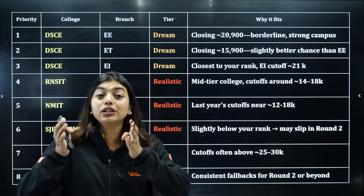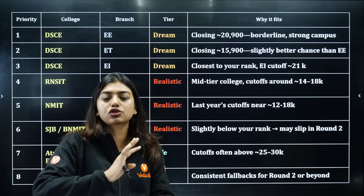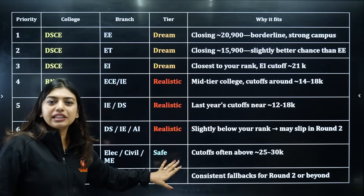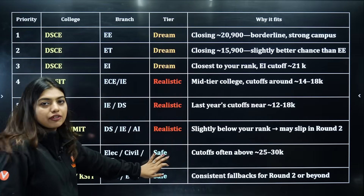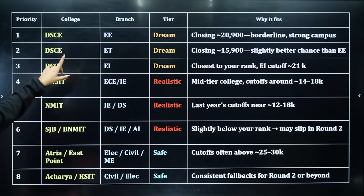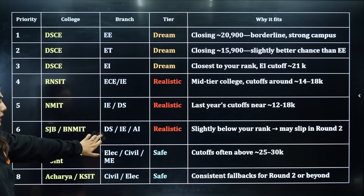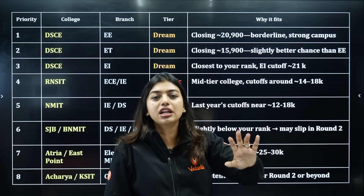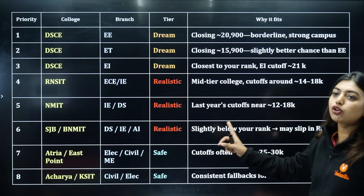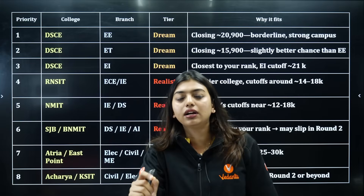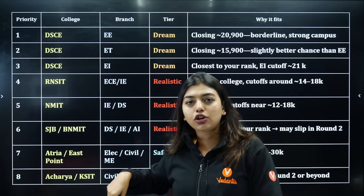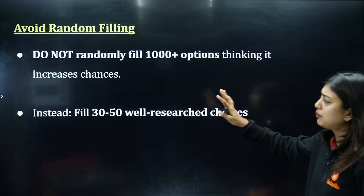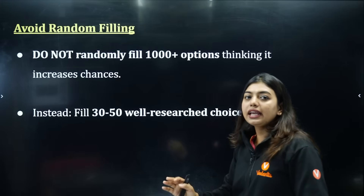For 20,000 rank, last year students with that rank got into this college, and even 25,000 rank got into this college — so that's realistic. Safe means anyway you'll get into this college. That is your safe option. Do not follow the blind method of putting safe first, then realistic, then top ones. You should work the other way: top first, then realistic, then safe.